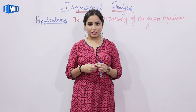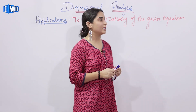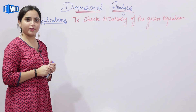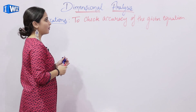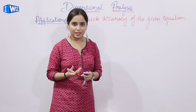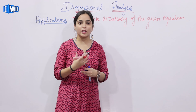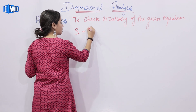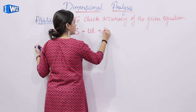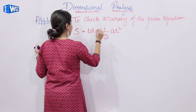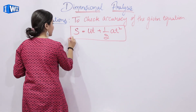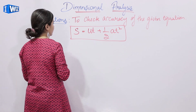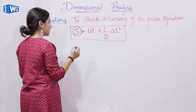This is how we can calculate dimensions for an equation or quantity. Now we will see the applications of dimensional analysis. The first application is to check the accuracy of a given equation. For example, using dimensional analysis we can check whether a given equation is accurate or not. Let's take S equals U T plus half A T squared. This is a very famous equation. Using dimensional analysis we will check whether the equation is accurate or not. Here S denotes the distance.